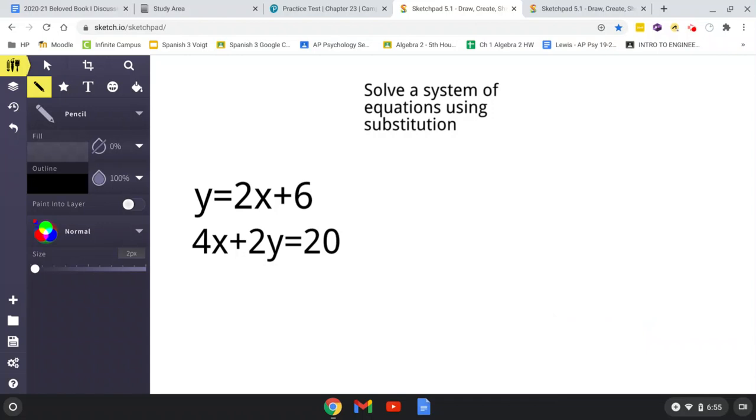which in this case y is solved for as y equals 2x plus 6, then you substitute 2x plus 6 for y. Or if, let's say, x equals 4y plus 3, you would substitute 4y plus 3 in for x in the equation.